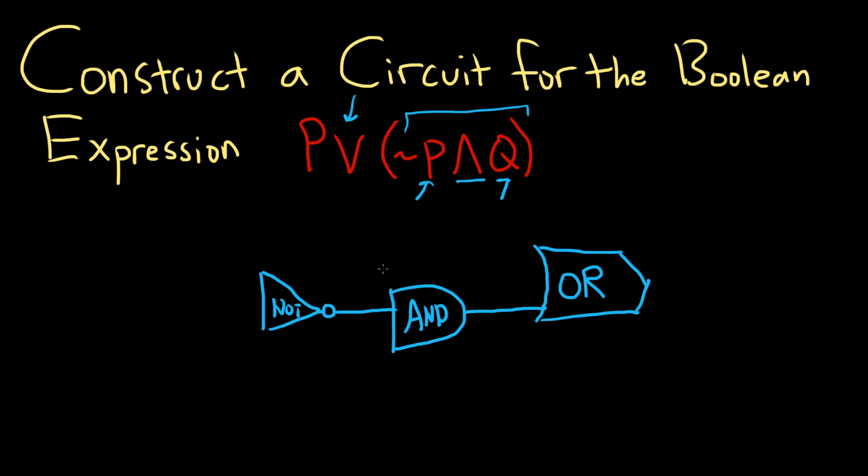Now we can go ahead and finish everything up. We know the P is going to the OR gate. So I'll just do this, boom, all the way there. We also know that P is also going to the NOT gate. We need that for this piece here. And Q is going to the AND gate.